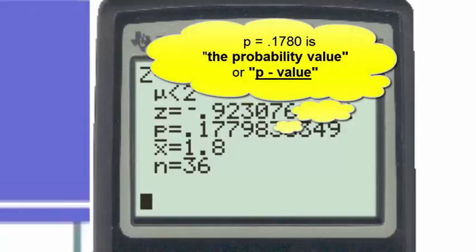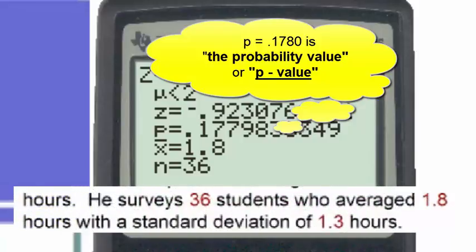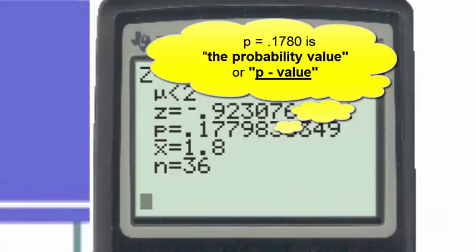P is the p-value, or probability value. And the probability value gives us the probability that a sample like this could exist. In other words, a sample of 36 students who would have an average of 1.8 and a standard deviation of 1.3, what is the probability that that sample would exist if indeed the null hypothesis is true? And we see that that probability is approximately 17.8%, if you were to round to the nearest tenth of a percent.